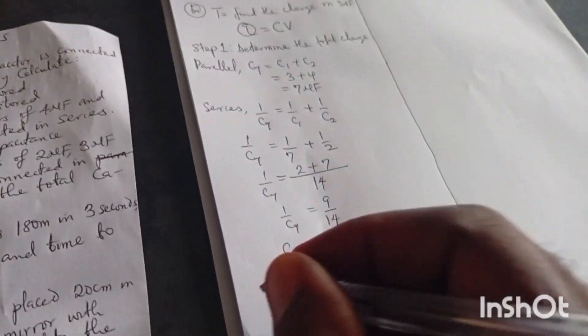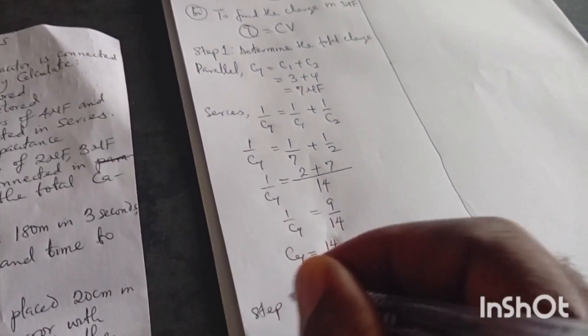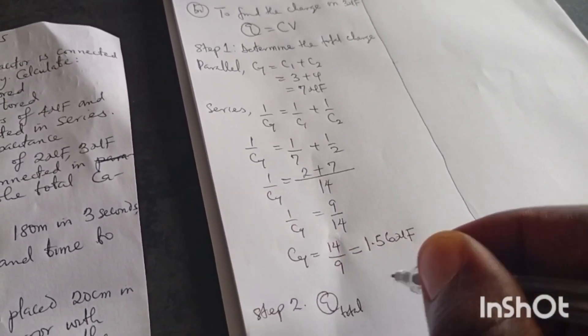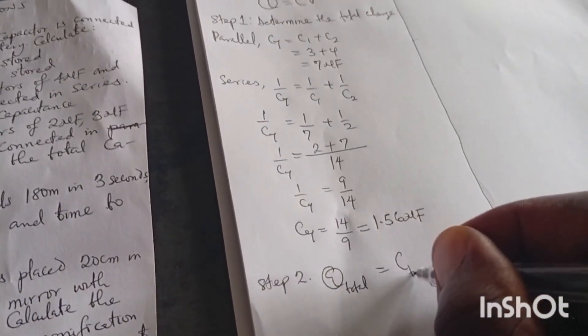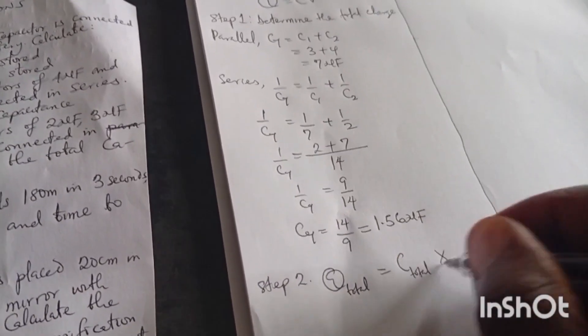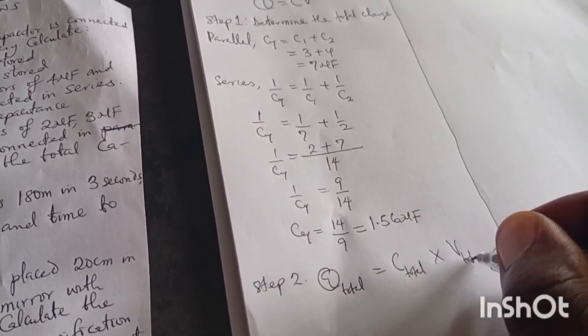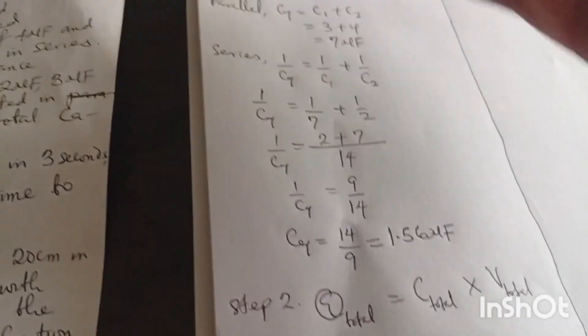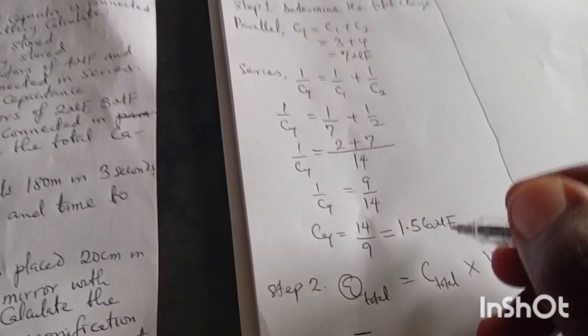All right, since we can move forward. Now we have known the C total, we have known the total voltage. Now we can find step two. Step two: determine the total charge. So Q total charge equals to total capacitor times total voltage. You can say I put total, total. You know the reason why I'm putting total, I want us to set. All this just won't pass through. Now we make our next question to be very simple.